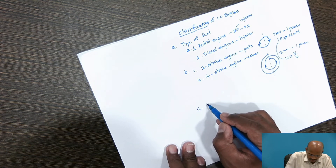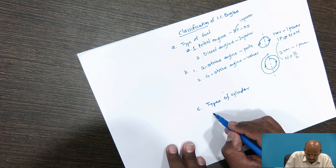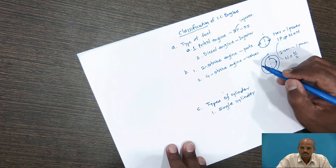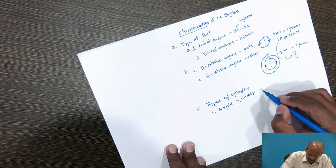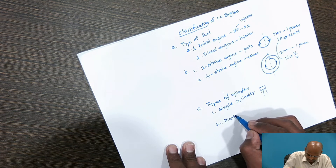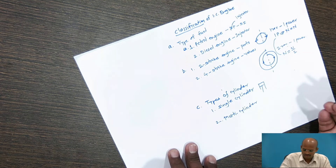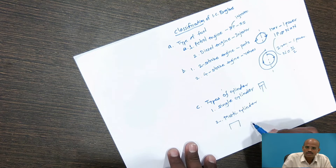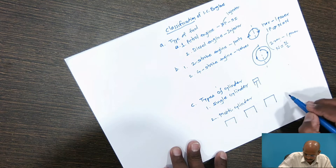Next type of classification is the types of cylinders. Depending upon types of cylinders, either the engine will be a single cylinder engine — most two-wheelers up to 350 cc capacity are using the single cylinder — or a multi-cylinder engine. Multiple cylinders are mounted on the same crankshaft in in-line engines.